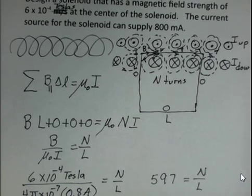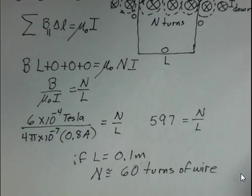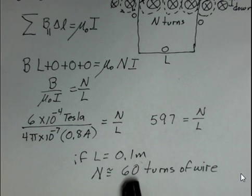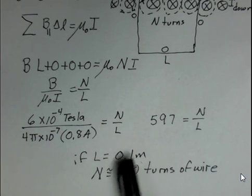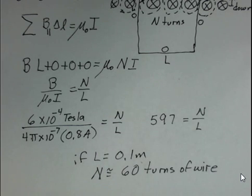So I hope you could follow along with those calculations and Ampere's law. You should do some more practicing on your own. Of course, if I would have chosen L to be 0.2 meters, then we'd need 120 turns of wire. So there are many possible answers. N over L needs to be 597, but if you choose a different L, you'll get a different number of turns of wire. If you pack the wire in more closely, there you are. Keep practicing.